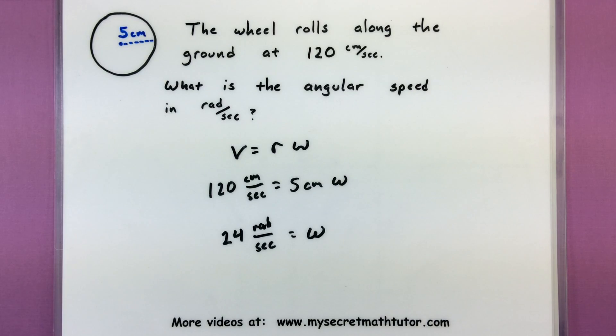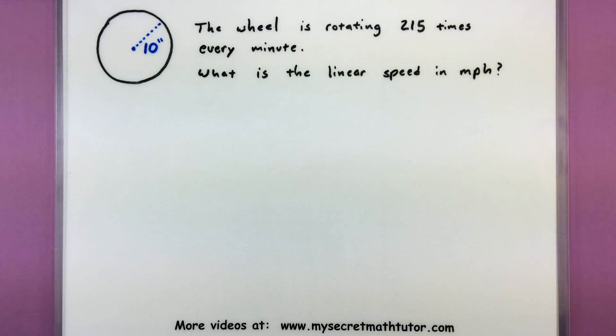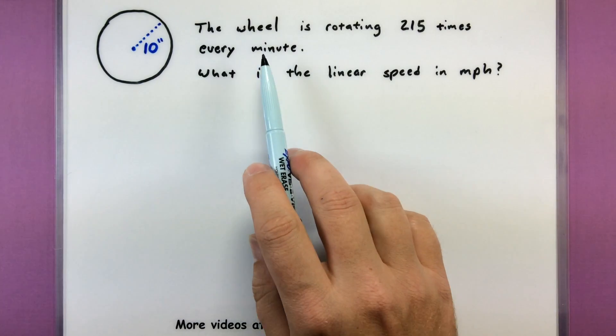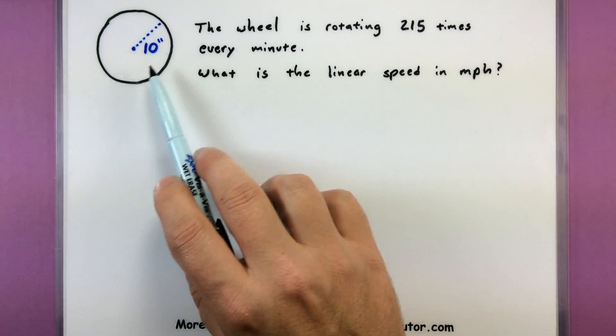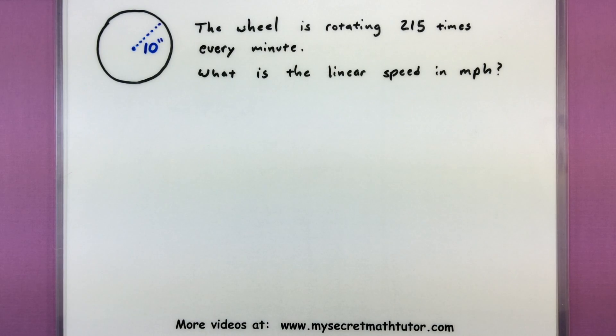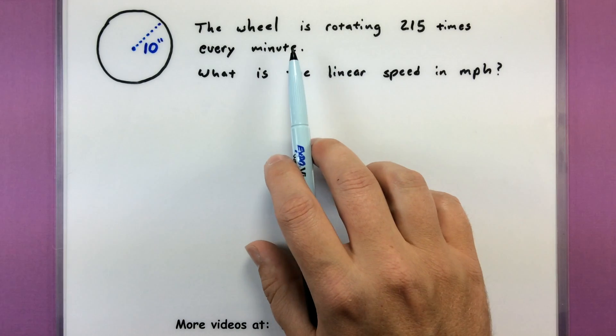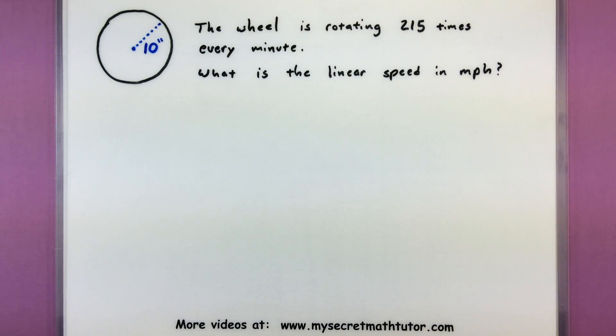All right let's do that one last example I mentioned where we'll use this formula to get our foot in the door, but then we'll also have to convert our units to make sure we're describing it in just the right way. For this one we have a wheel that is rotating at 215 times every minute. Now the question is what is the linear speed in miles per hour? So one thing you really want to keep track of is notice how we have information on how much this wheel is turning but it's not really the angular speed. You know that would be in like radians per minute or radians per second. Also what I'm really looking for at the end is the miles per hour so I want to make sure my units fit that when I'm all done.